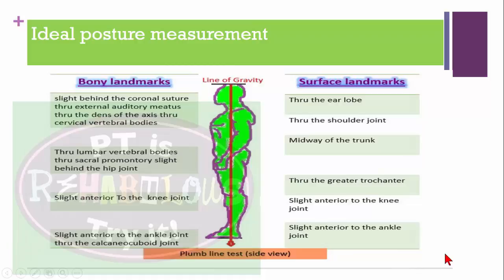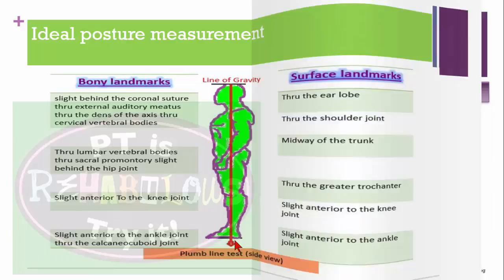For ideal posture, we should measure with the help of a plumb line. The external auditory meatus, shoulder, hip, knee, and ankle should all be at the same level. Both PSIS should be at the same level. The plumb line passes through the external auditory meatus, anterior to the shoulder, through the hip joint, slightly anterior to the knee joint, and slightly anterior to the ankle joint.